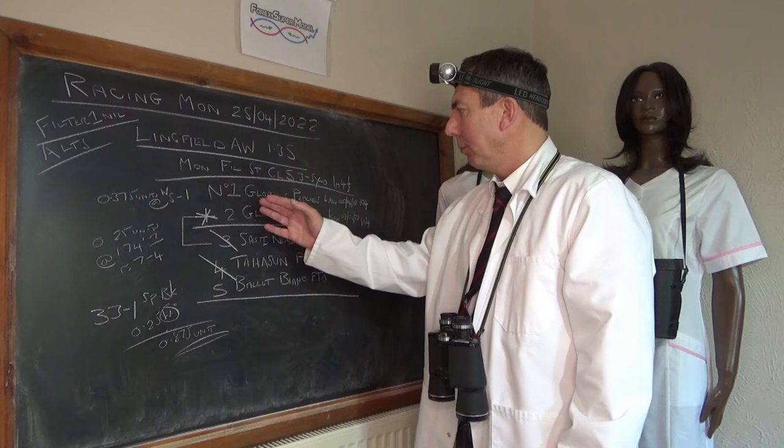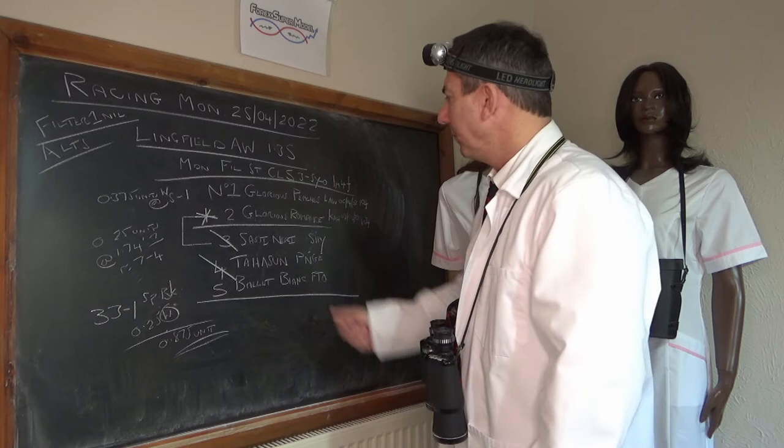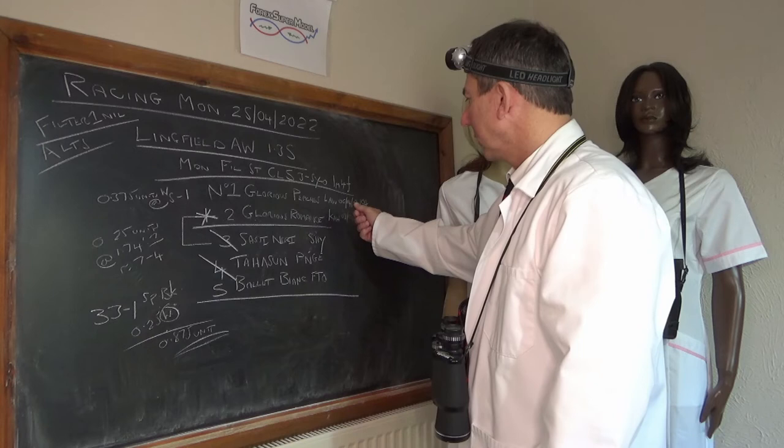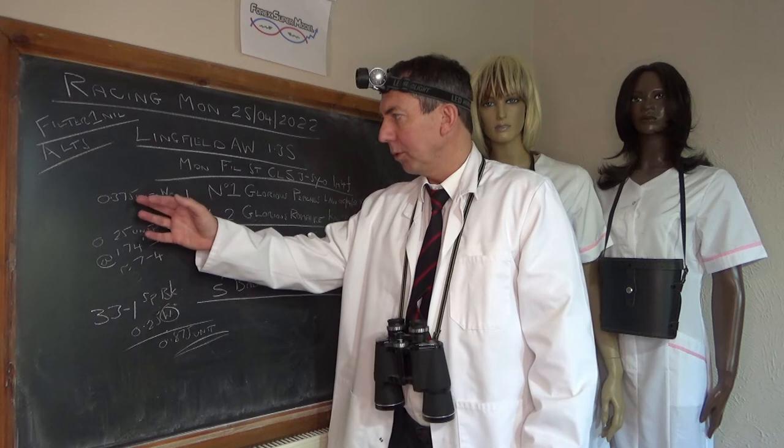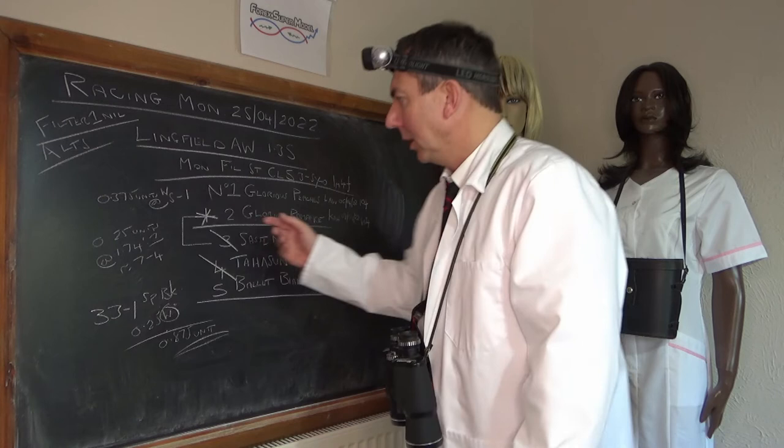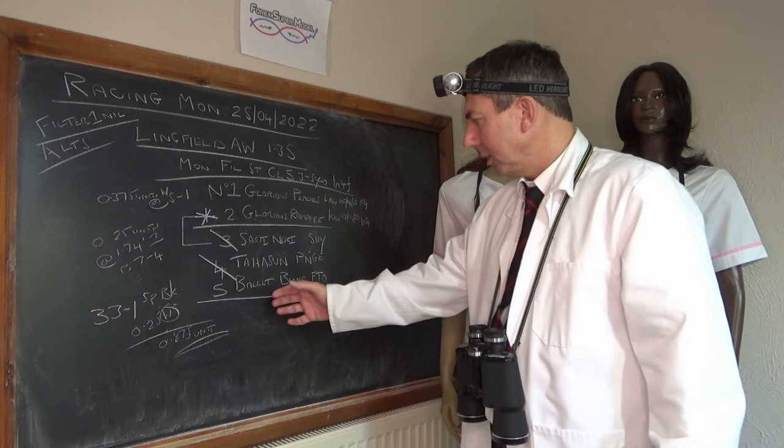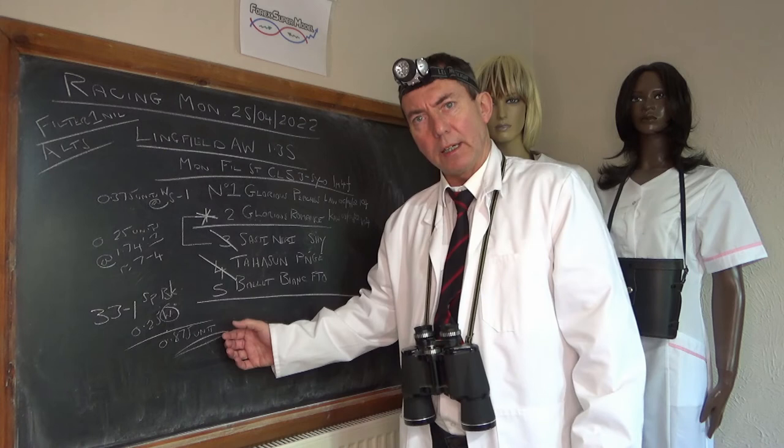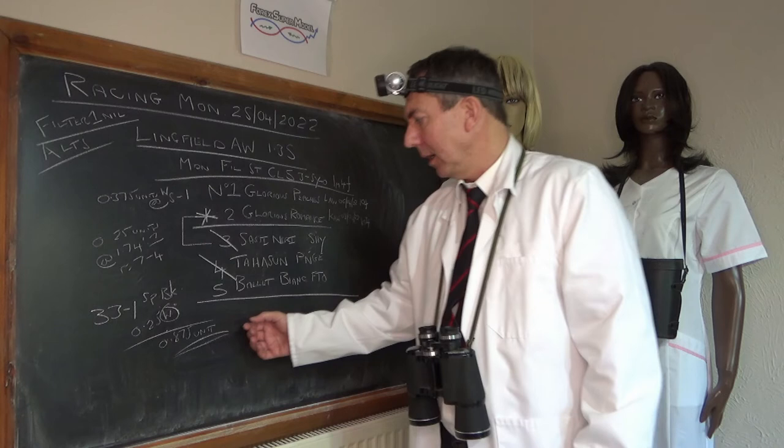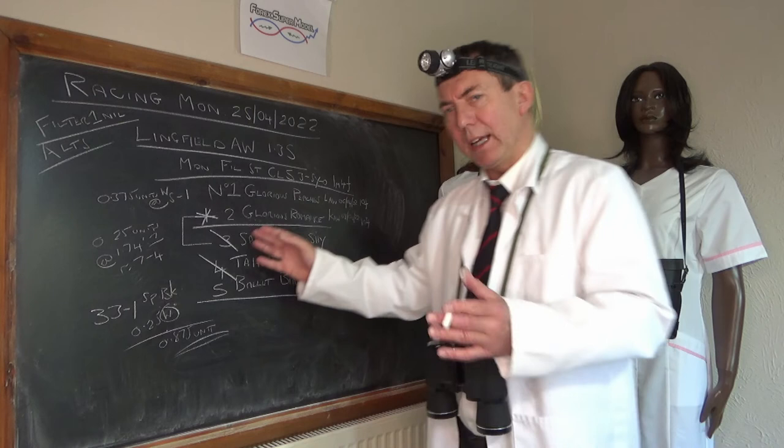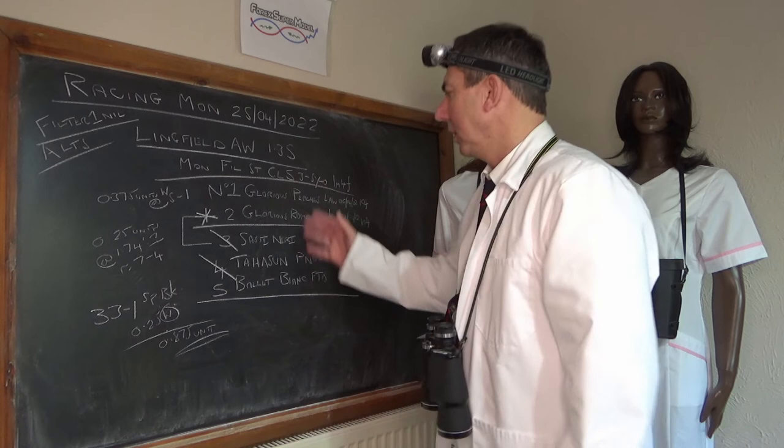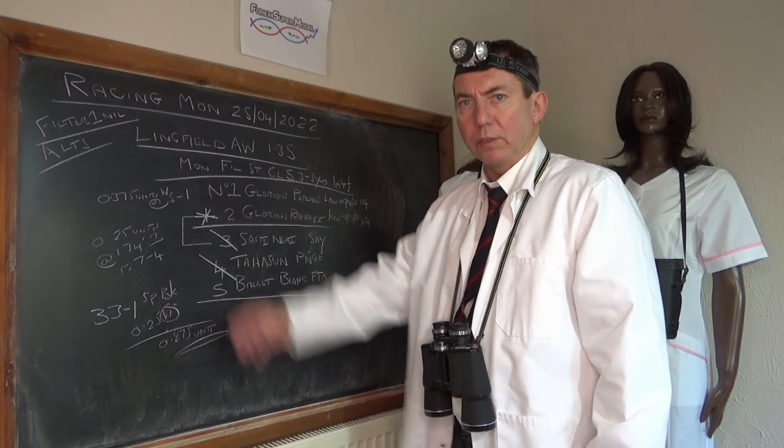So what we're left with is this number one Glorious Peaches. This is our main horse effectively, Glorious Peaches, it's number one. It's had a run at Lingfield on the all weather on the 6th of the 4th of 22, 10 furlongs. 10 furlongs at Lingfield going to 12 is a very good feed and we've put slightly more on this one, put 0.375 of a unit on and we've got an average of five to one. So we've skewed it, we've got three things going, we've got this Ballet Bianc which is an FTO as an extreme event, and we've also got this benchmark course Glorious Romance which is going to get our money back or very small loss if it comes in.